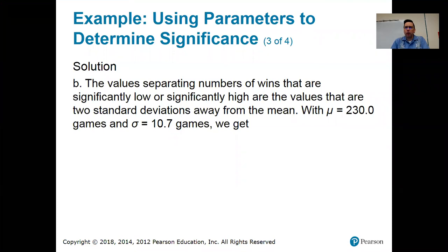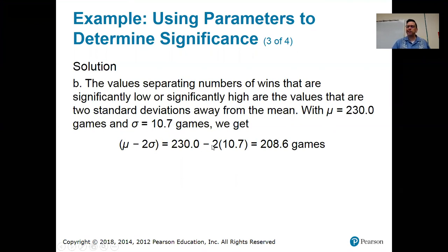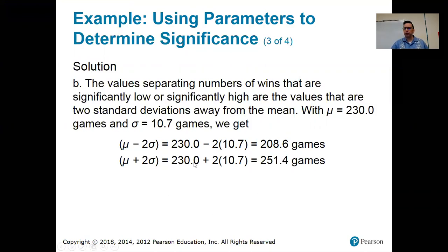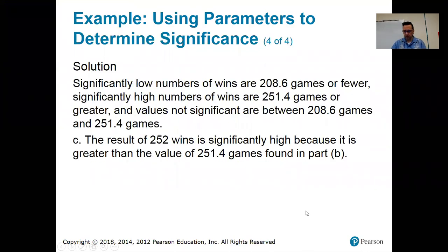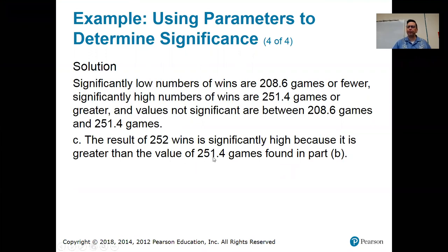For part B, what are the cutoff points for significantly low and significantly high? The mean is 230 and the standard deviation is 10.7. Two standard deviations below the mean: 230 minus 2 times 10.7 equals 208.6 — any number of wins less than that is significantly low. Two standard deviations above the mean: 230 plus 2 times 10.7 equals 251.4. Is 252 games significantly high? Yes, just barely, because 252 is greater than 251.4.